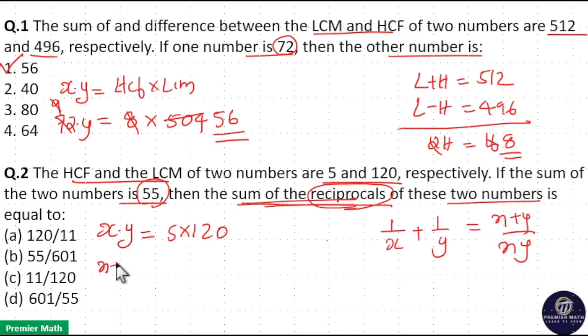Now (x + y)/xy equals... x plus y is 55 and xy is 5 times 120. 5 goes 11 times in 55, so 11/120. Option C is your answer.